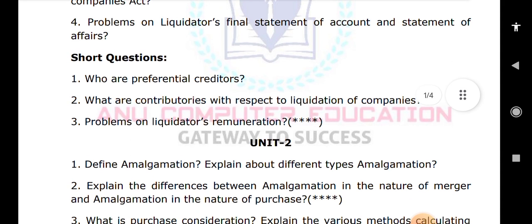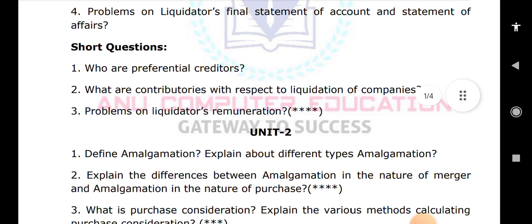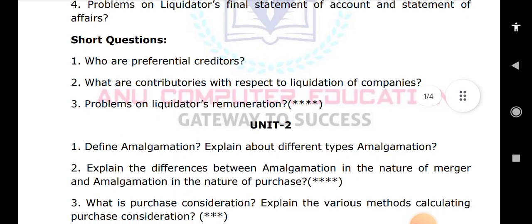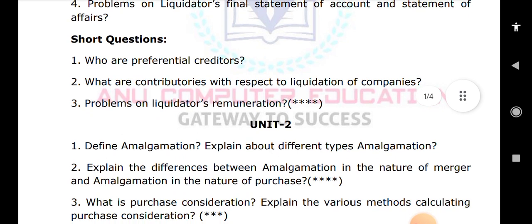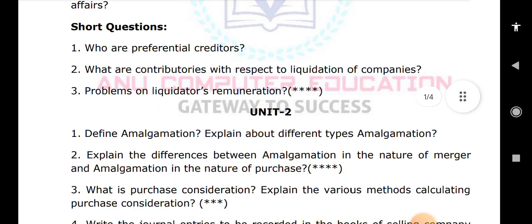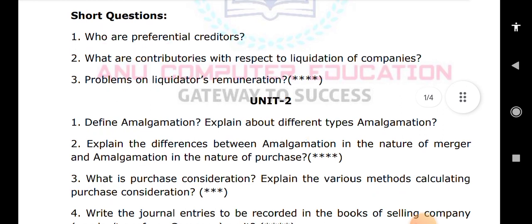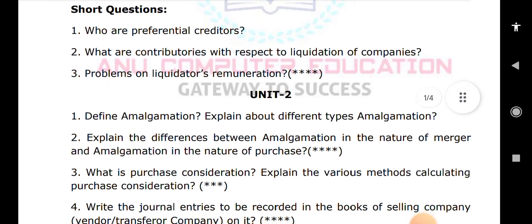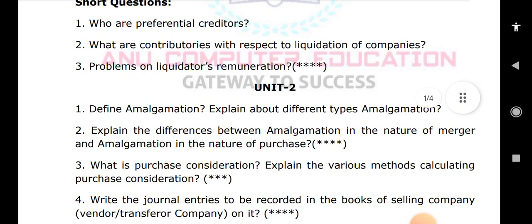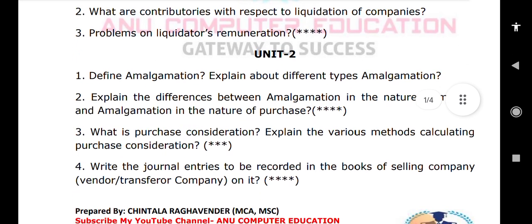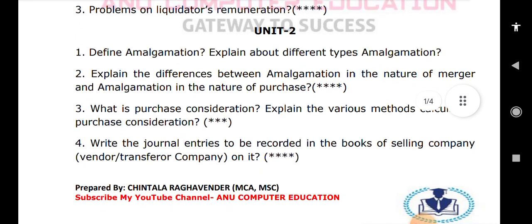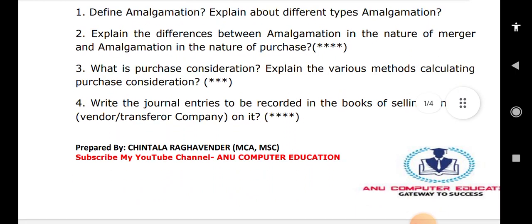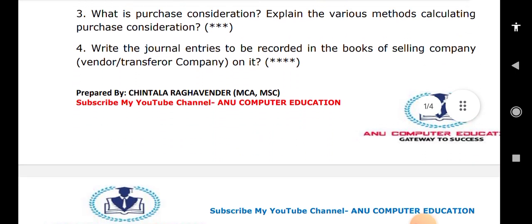Moving to unit two, the very important questions include: what is purchase consideration? The star-marked questions are the most important. Also: write the journal entries to be recorded in the books of the selling company and vendor.